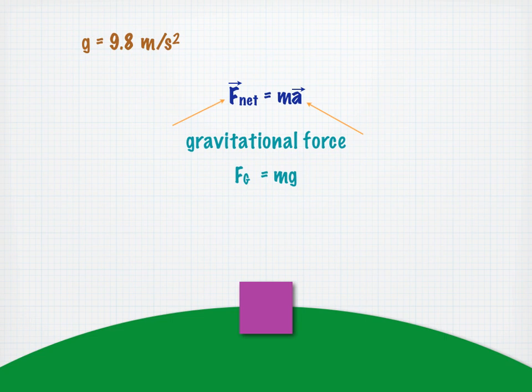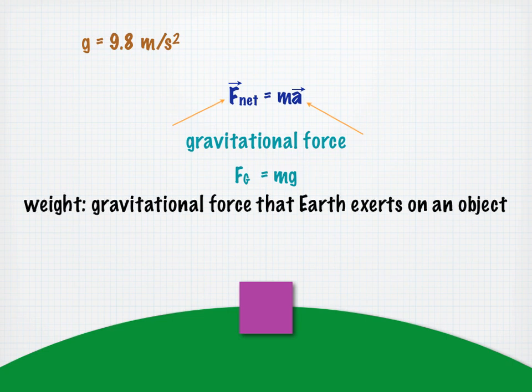The weight of an object on earth is directly related to the gravitational force of earth. In fact, the weight of an object on or above the earth is the gravitational force that the earth exerts on the object. So we can find the weight of an object on earth by multiplying the object's mass by the gravitational acceleration value.